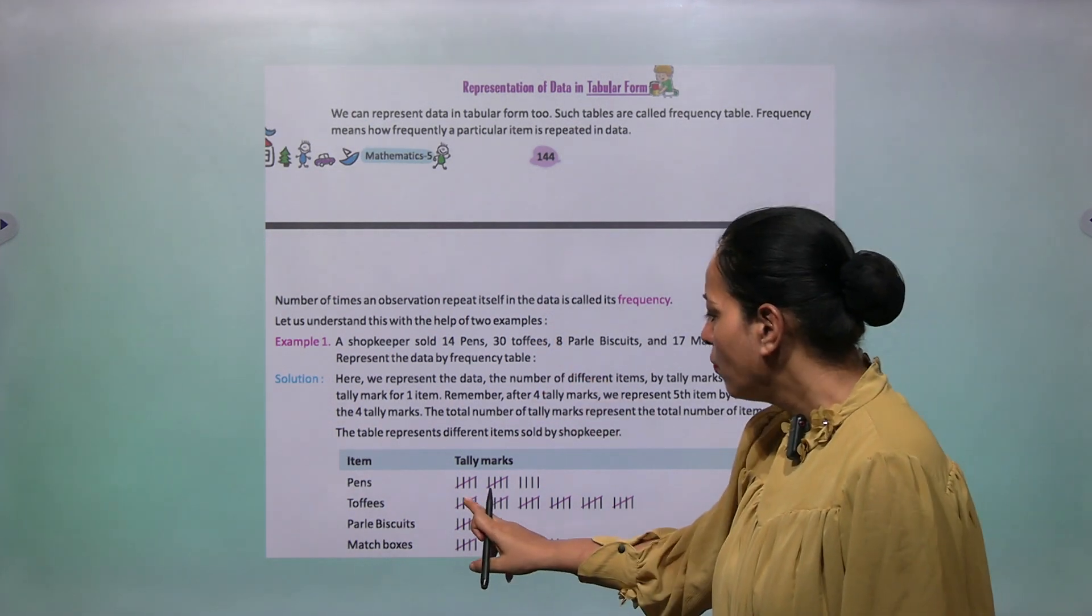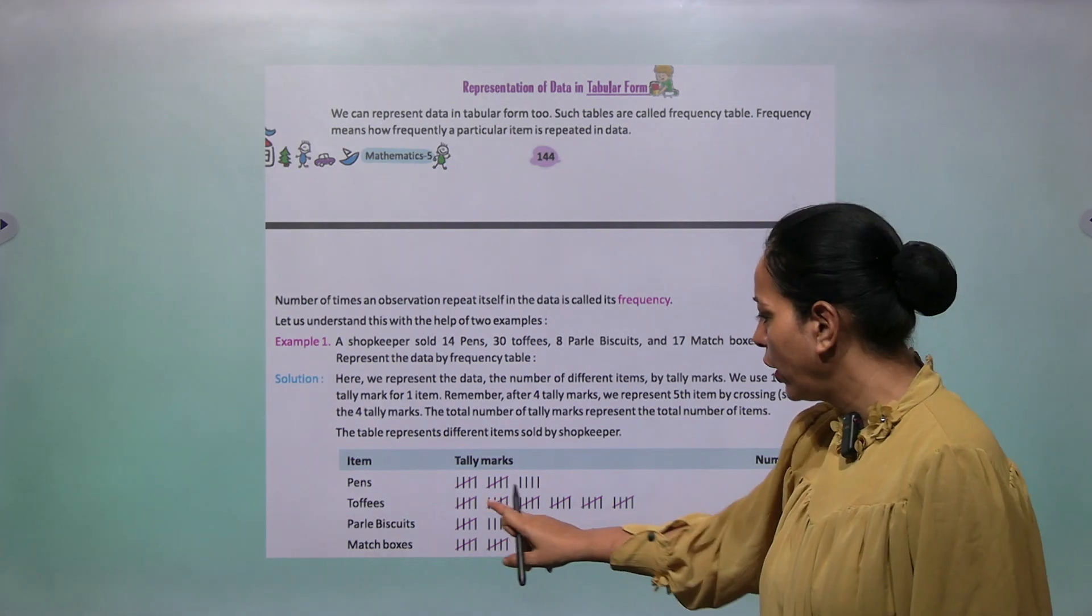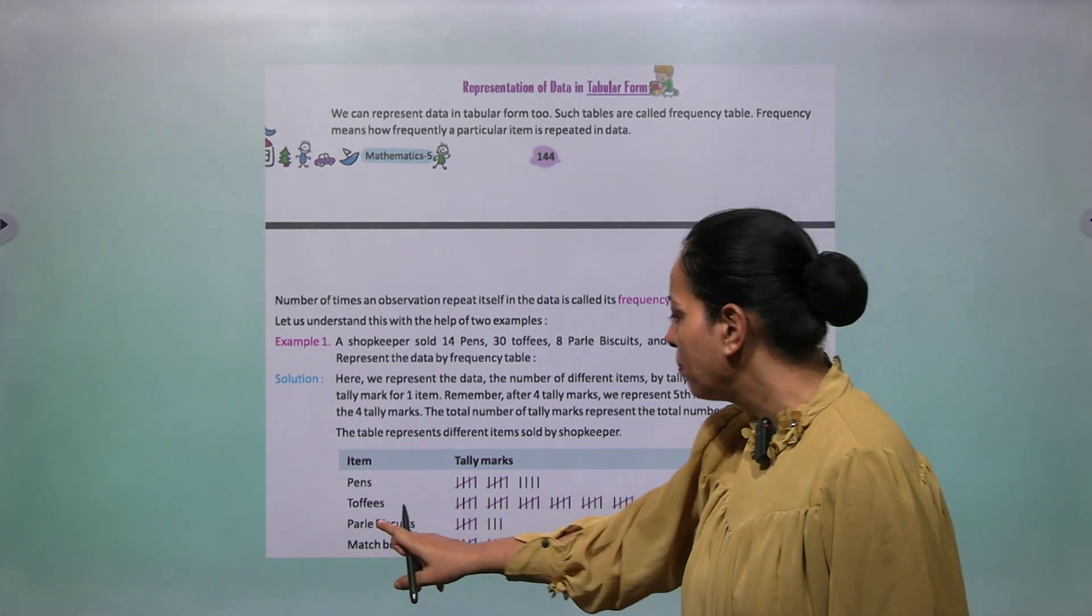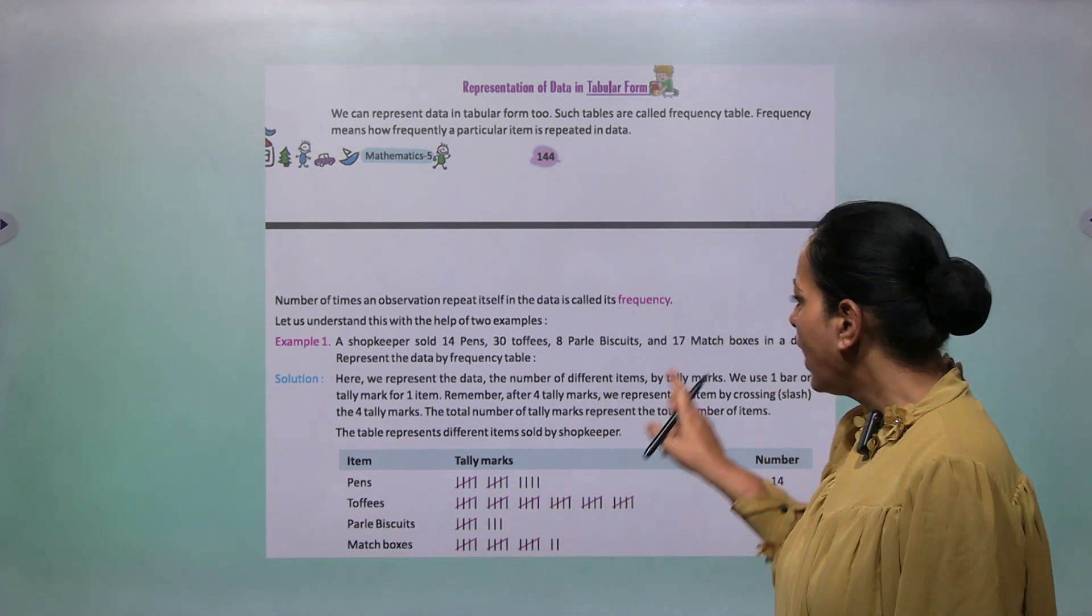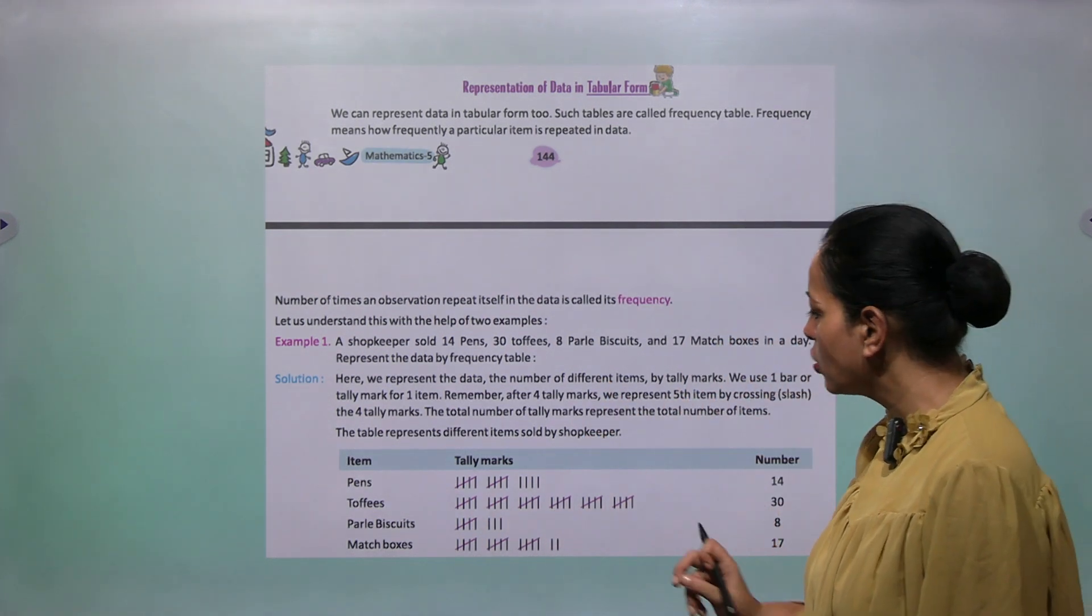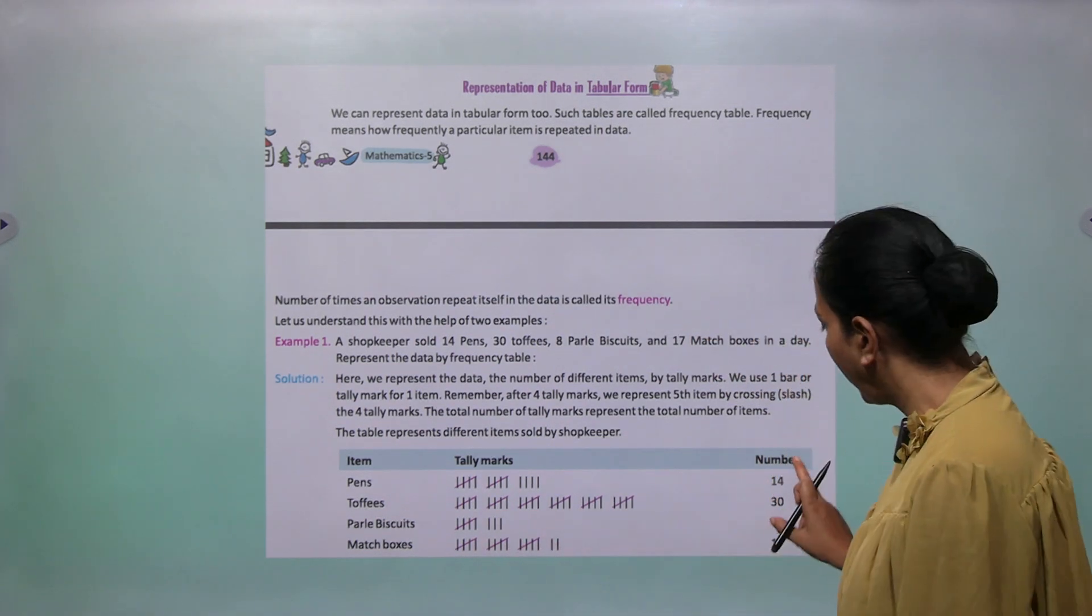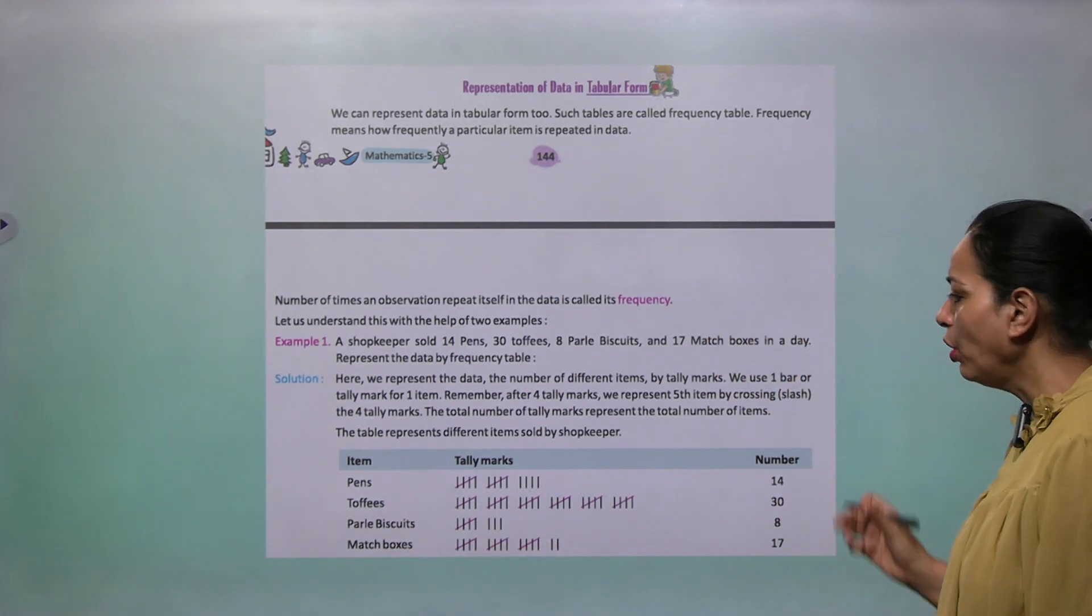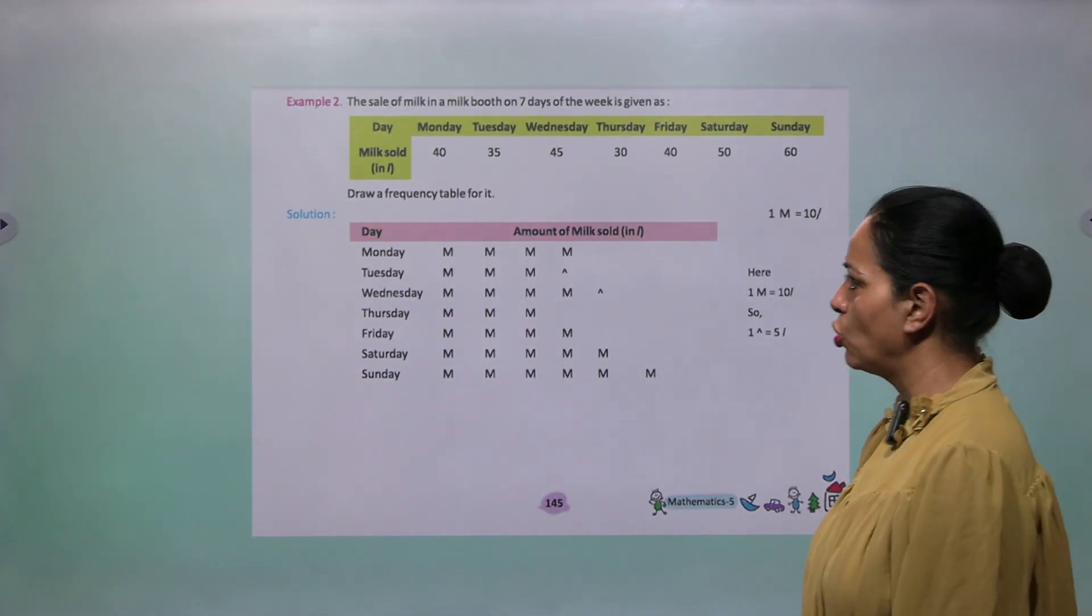Parle biscuits, how many Parle biscuits? Eight. So five and three. And then 17 match boxes. So 17 means five, five, five, and two. So like this. And write here frequency or number. This is the frequency table distribution.